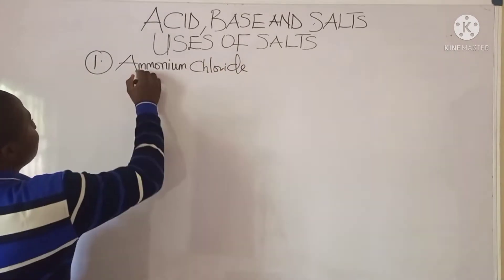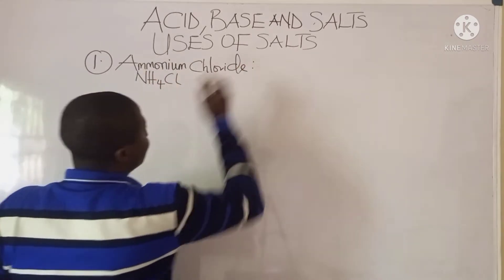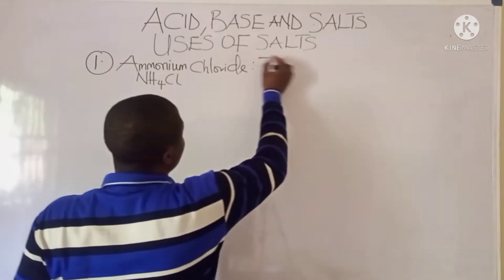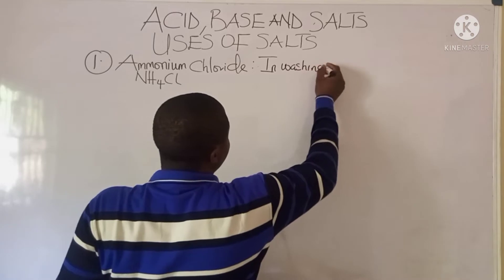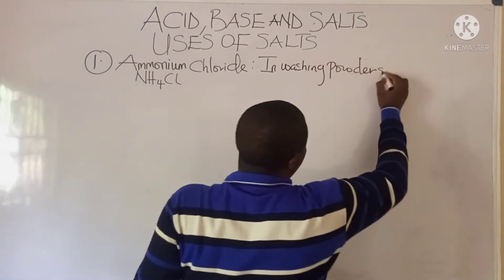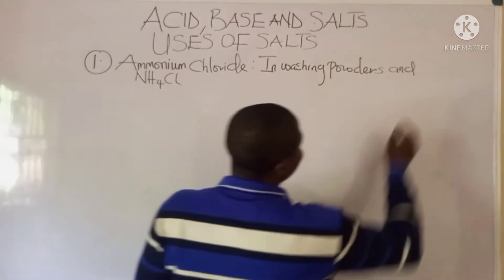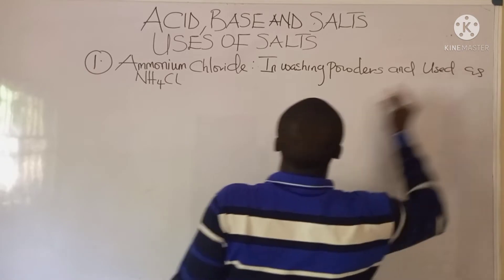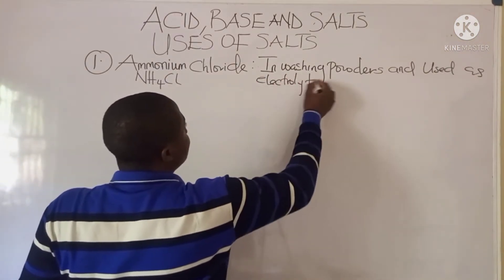Ammonium chloride has the formula NH4Cl. The uses of this compound, which is a salt — it is used in washing powders, and it is also used as an electrolyte in dry cells.